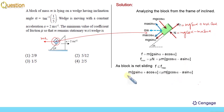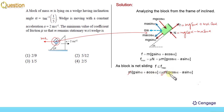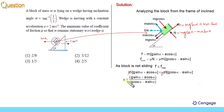Here m cancels from both sides, and now we can get the value of μ. So we can write μ is greater than or equal to (g·sin α + a·cos α) divided by (g·cos α − a·sin α). We can take cos α as common, and since we are given the value of tan α, dividing numerator and denominator by cos α gives us (g·tan α + a) divided by (g − a·tan α).